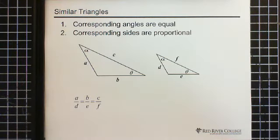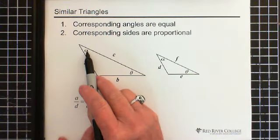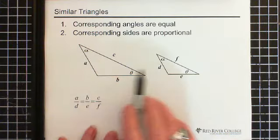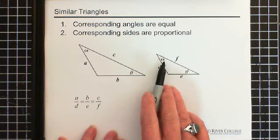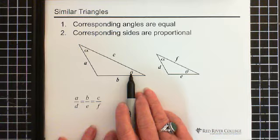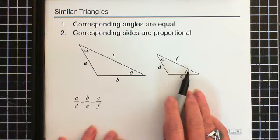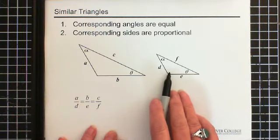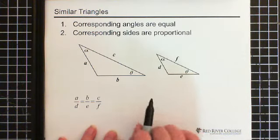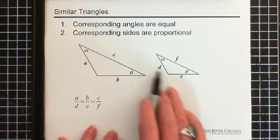Similar triangles have corresponding angles that are equal and corresponding sides that are proportional. So if this angle here is 35 degrees, then this angle would be 35 degrees. This angle here is 27 degrees, then this angle has to be 27 degrees. That's when you have a similar triangle. And of course, the angle here has to equal the angle here.